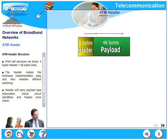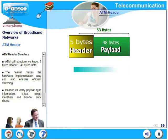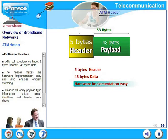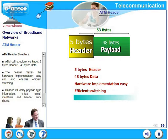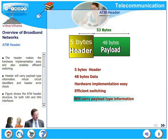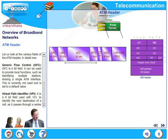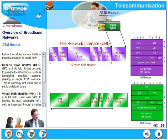In this slide, let us look at ATM header structure. The ATM cell structure consists of 5 bytes of header plus 48 bytes of data. The header makes the hardware implementation easy and also enables efficient switching. The header carries payload type information, virtual circuit identifiers, and header error check. The figure shows the ATM header structure for both UNI and NNI interfaces.